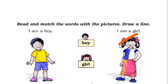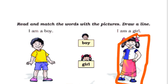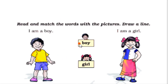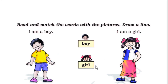The second one says I am a girl. Now the first word is boy. So I will make a line which joins the word boy to the picture of the boy. The next word is girl. So now I will make a line which joins the word to the picture.